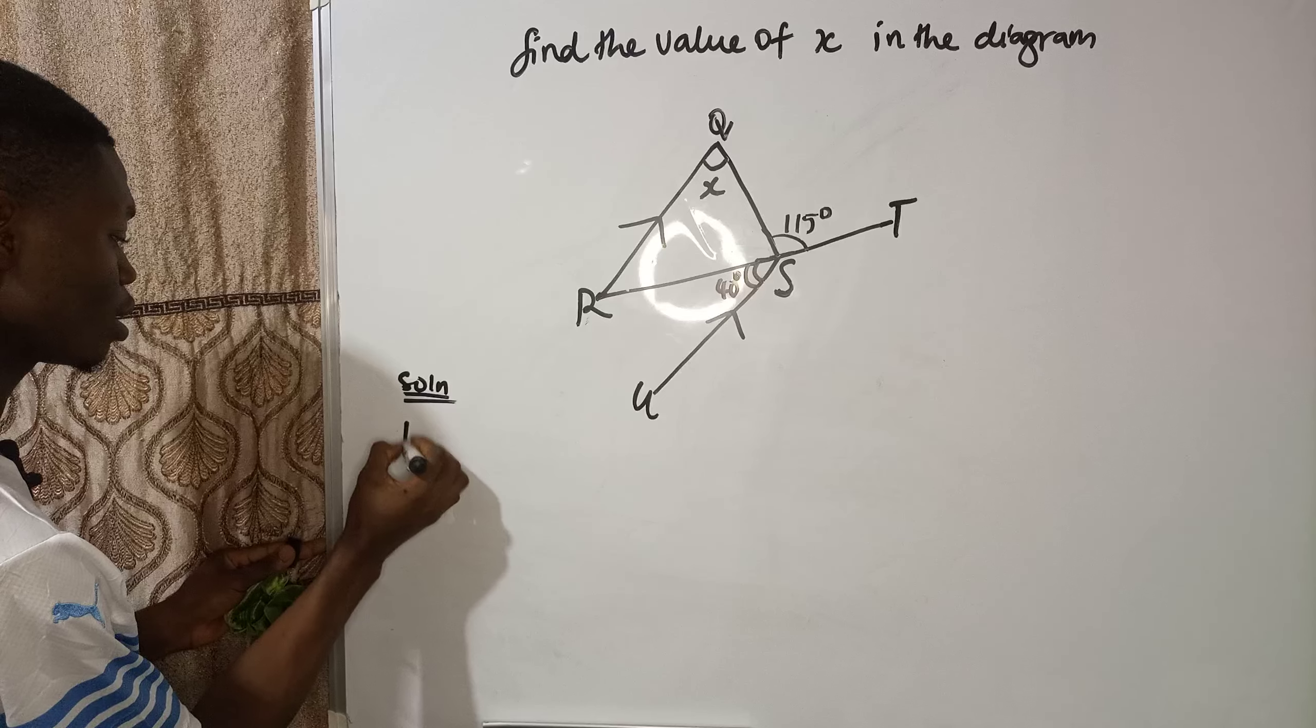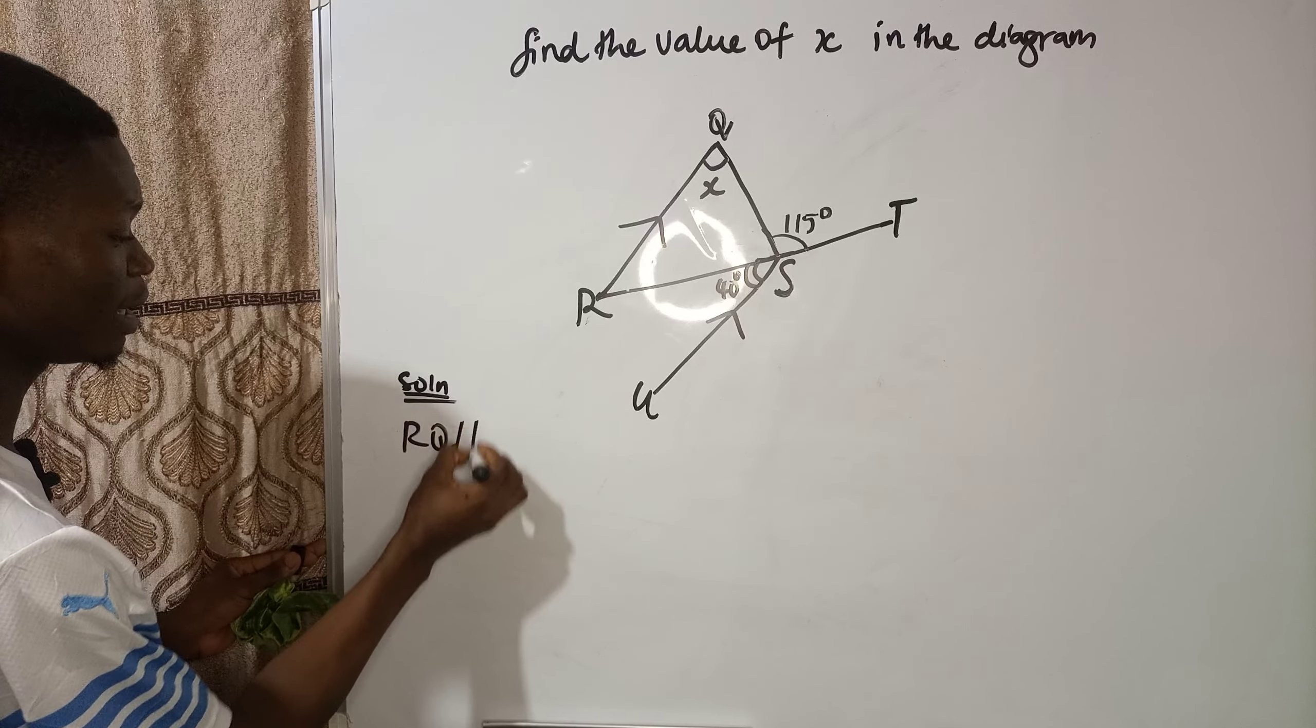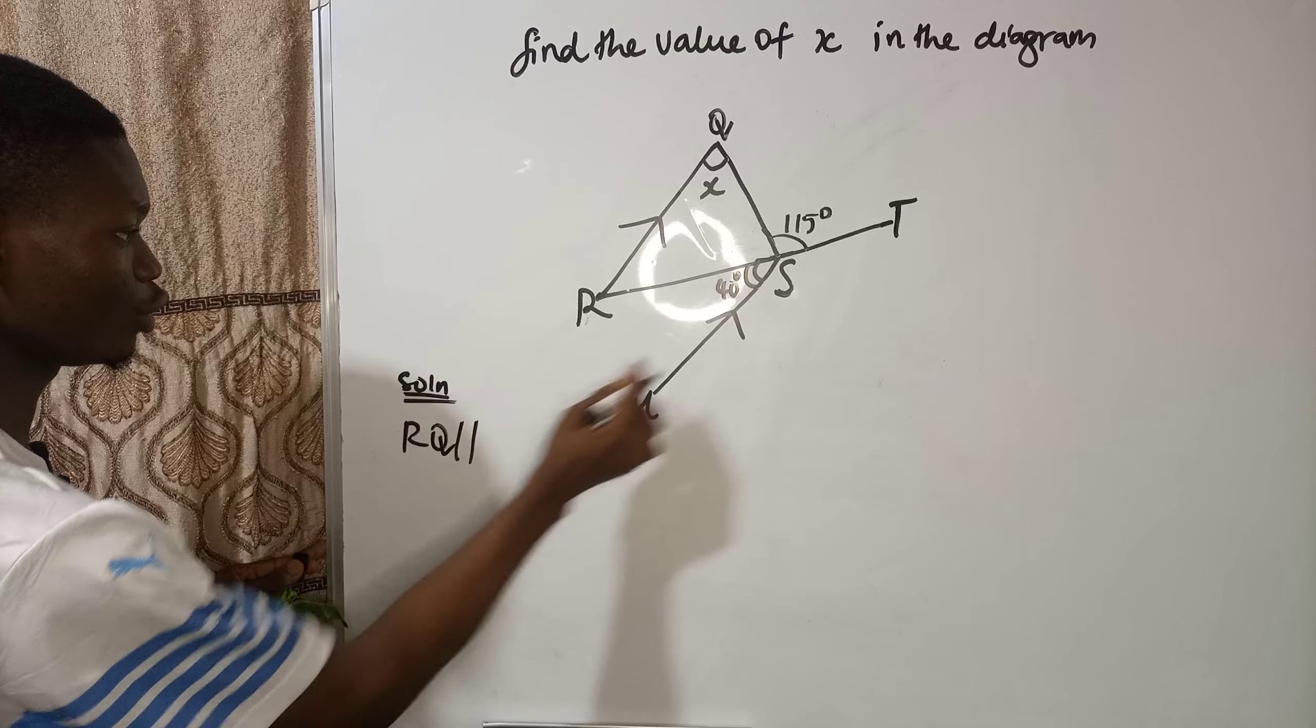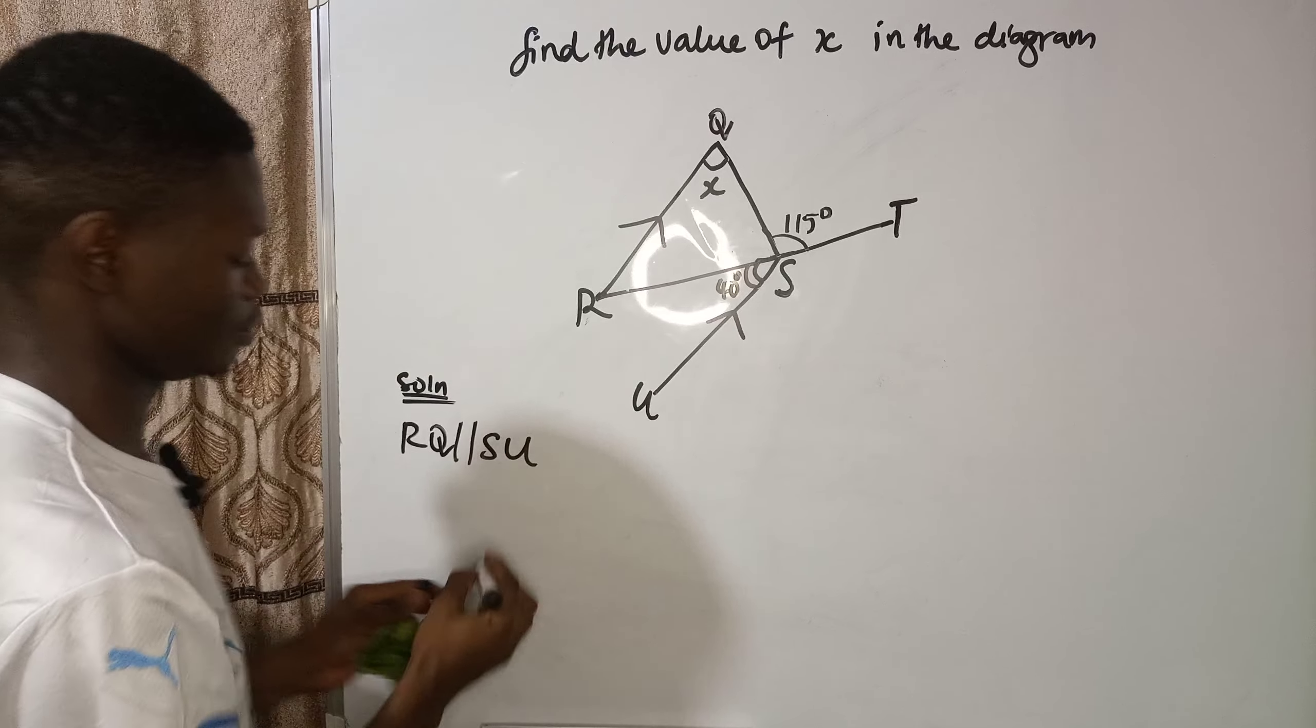So we know that RQ is parallel to SU in the diagram.